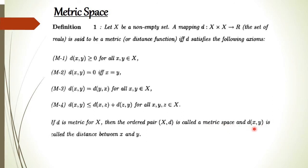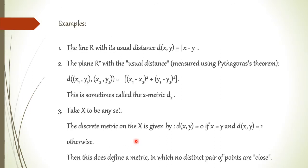Now let's see some examples. The first example: let X be the set of real numbers R. Then the usual distance, which is the modulus of X minus Y, satisfies all four properties and is called the usual distance — this is the metric defined on R. Similarly, on the set R², the distance is given by the square root of (X₁ − X₂)² + (Y₁ − Y₂)², and this is called the two-metric.